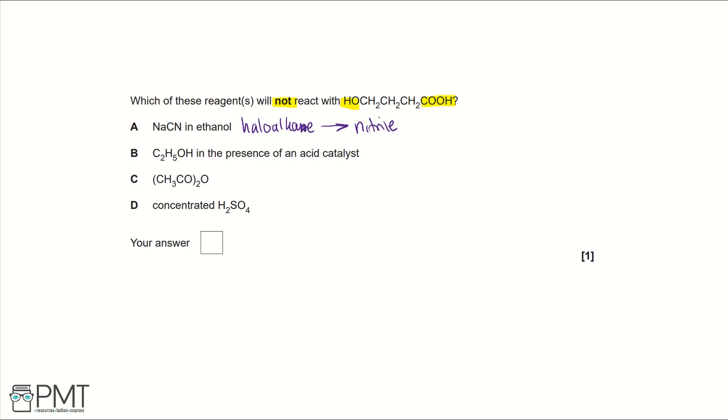Then looking at B: we have this alcohol group shown by the OH in the presence of an acid catalyst. These are the reagents and conditions for what's called esterification. Because we're given an alcohol, that means it's going to react with our carboxylic acid group.